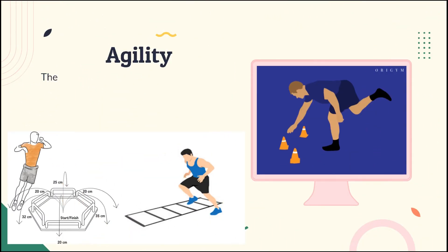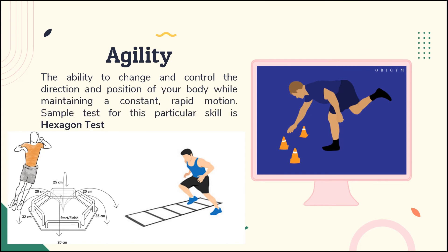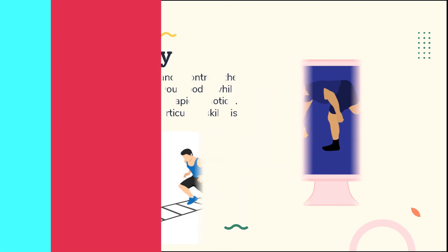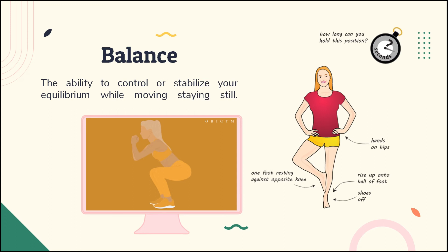Agility is the ability to change and control the direction and position of your body while maintaining constant, rapid motion. A sample test for agility is the hexagon test. Balance is the ability to control or stabilize your equilibrium while moving or staying still. A sample test for balance is the torque balance test.